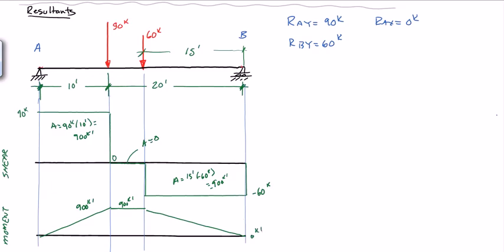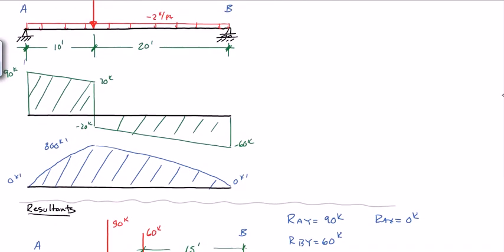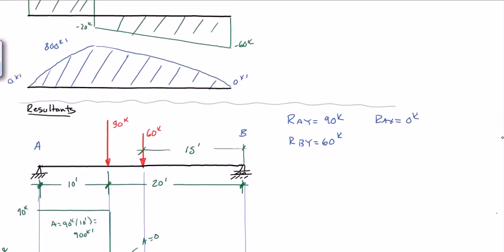So you can see the difference with this one is that we have straight shear and moment is straight lines. And the maximum moment happens across this entire region in the middle. And that maximum moment is higher than the maximum moment we got here, which was 800 kip feet.